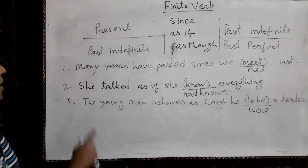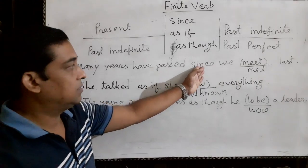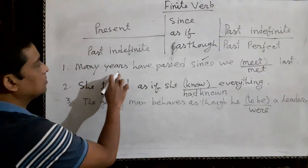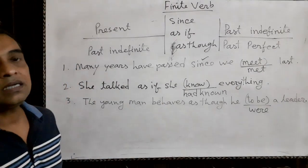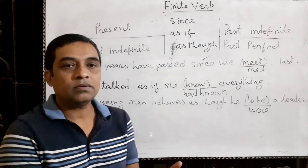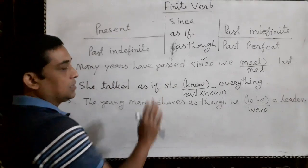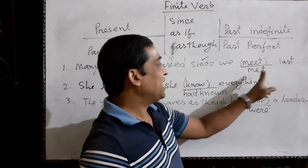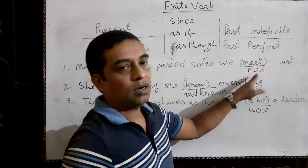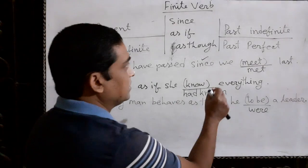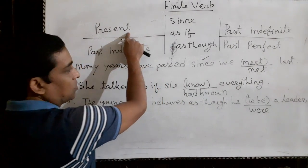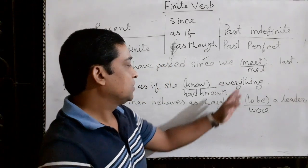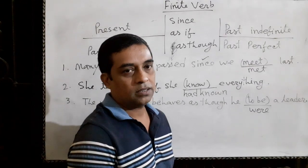Example number one: 'Many years have passed since we met last.' Here we have found the conjunction 'since.' We can see the first clause is in present tense — specifically present perfect tense. I told you any kind of present tense counts. 'Many years have passed' is in present perfect tense. So the correct answer will be 'we met last.' 'Met' is the past form of 'meet.' We have written this because if the first clause is in present tense, then the last clause will be in past indefinite tense. So we have written 'met,' the past form of 'meet.' This is the answer.